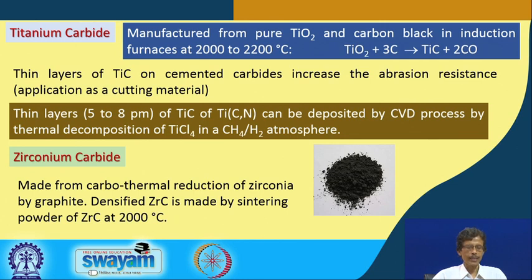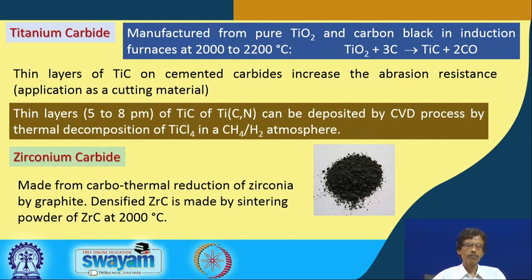The densified zirconium carbide is made by first performing carbothermal reduction using graphite, then sintering the zirconium carbide powder at a temperature of 2000°C.